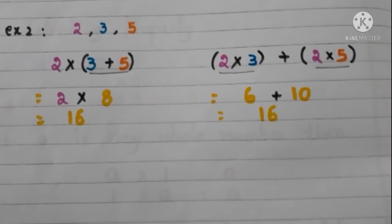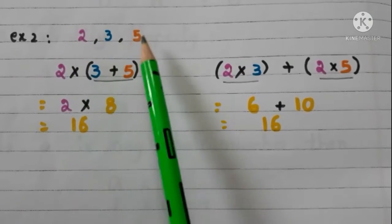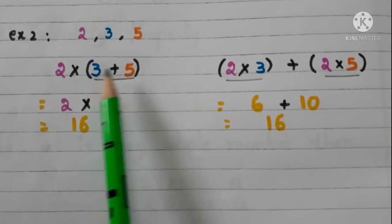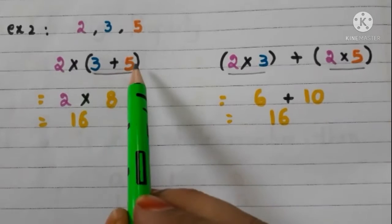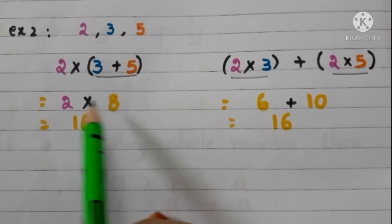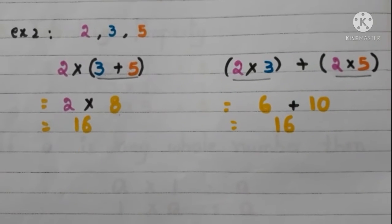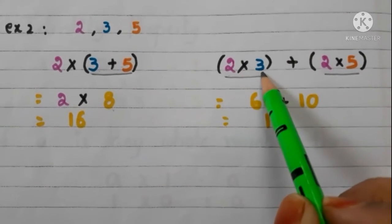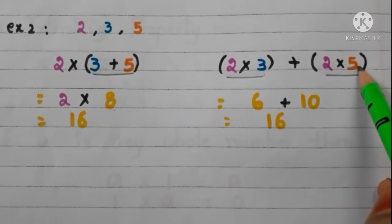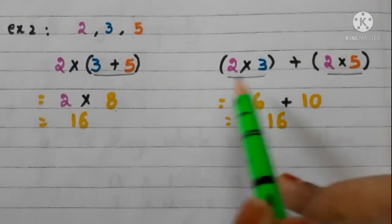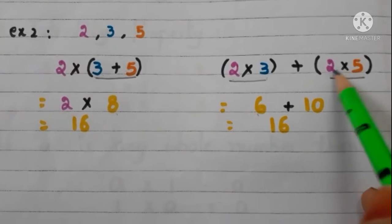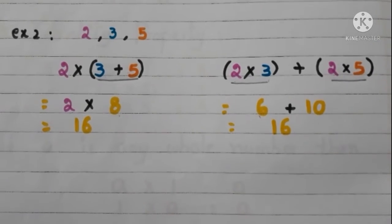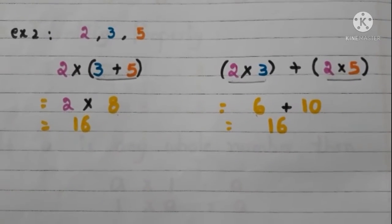Now, let us see another example. Take 3 whole numbers 2, 3 and 5. First, we take the product of 2 and addition of 3 and 5. First, add 3 and 5: 3 plus 5 is 8. Now, multiply with 2: 2 times 8 are 16. Now, let us do in another way. Multiply 2 and 3, then multiply 2 and 5, finally take the addition of these 2. 2 times 3 are 6, 2 times 5 are 10. Add 6 and 10: 6 plus 10 is 16. In these 2 cases, we get the same answer.